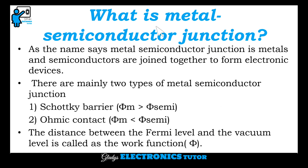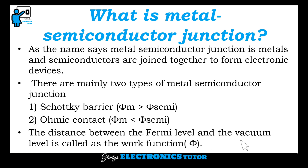A metal-semiconductor junction is formed when metals and semiconductors are joined together to form electronic devices. There are mainly two types: Schottky barrier and ohmic contact. In a Schottky barrier, φ_m is greater than φ_semiconductor, while in ohmic contact, φ_m is lesser than φ_semiconductor. The distance between the Fermi level and the vacuum level is called the work function φ.